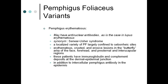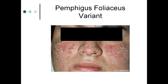Pemphigus erythematosus (Senear–Usher syndrome) is a localized variety of pemphigus foliaceous largely confined to seborrheic sites. It may have anti-nuclear antibodies as in lupus erythematosus. Erythematous, crusted, and erosive lesions are seen in the butterfly area of the face, forehead, presternal, and interscapular regions. These patients may have immunoglobulin and complement deposits at the dermal–epidermal junction plus intercellular pemphigus antibodies in the epidermis.